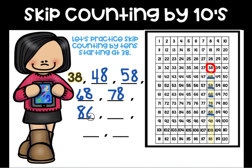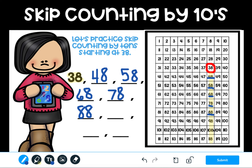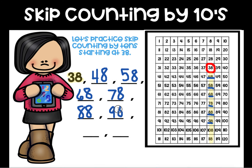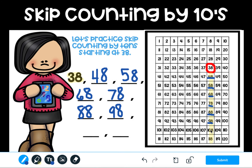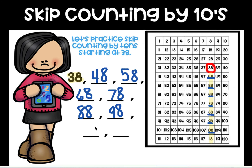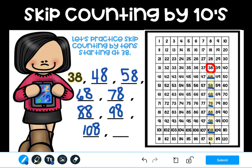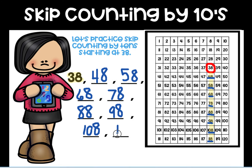Can you tell me what number would come next? After 88, what number comes next? Take a look at the 120s chart and then you're going to type your answer. If you said 98, you are correct. After 98 I'm in the hundreds now, but that's okay. Underneath 98 is 108. And after 108, what is the final number that I am going to end on? If you said 118, you are correct.